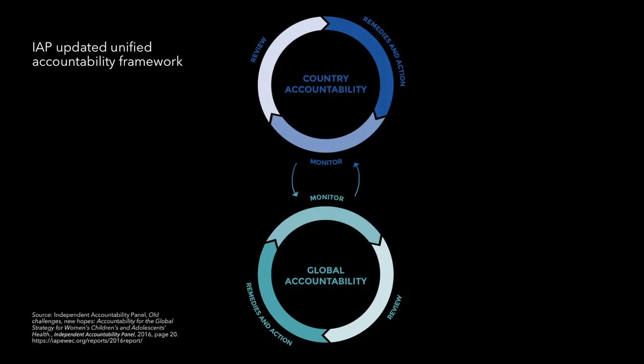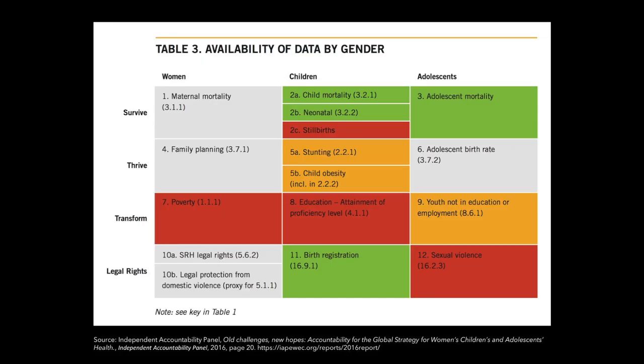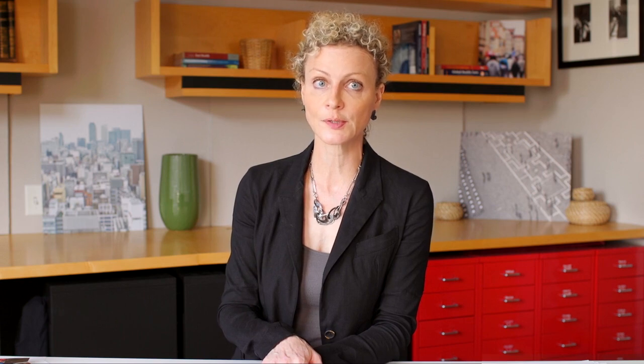The IAP has used a unified framework for what accountability means at both global and national levels. In health and global health, accurate and reliable data is absolutely essential for accountability. But we require more than just data — data should be disaggregated so that we can identify disparities within population groups. We also want fit-for-purpose indicators, and we want to make sure that indicators chosen don't lead to any adverse unintended consequences, such as coercive practices to increase coverage among certain populations.